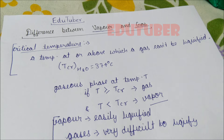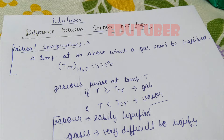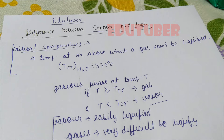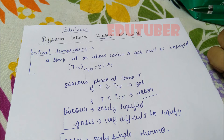The boiling temperature of water is 100 degrees Celsius, meaning above 100°C water converts into vapor state, and below 100°C it will be in liquid state. Similarly, critical temperature is a temperature at or above which the only phase of substance that exists is gas.